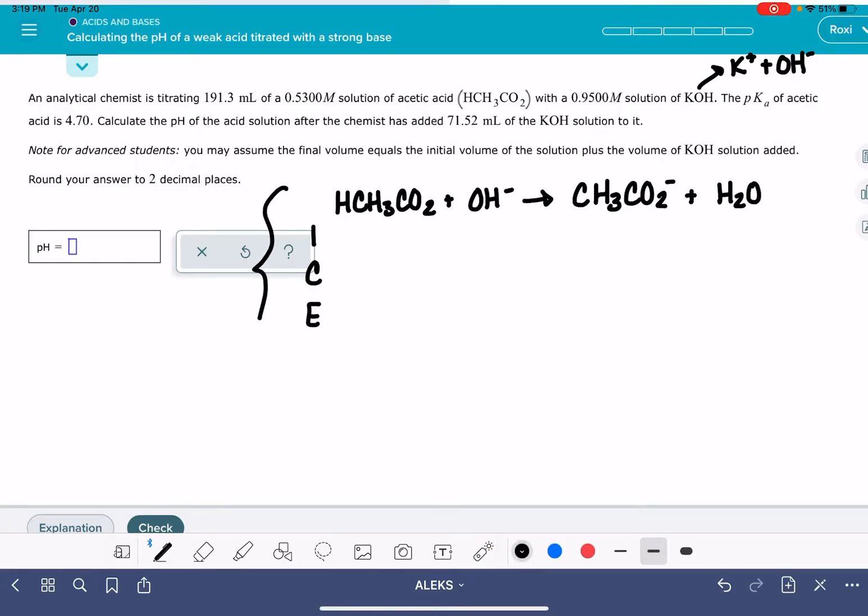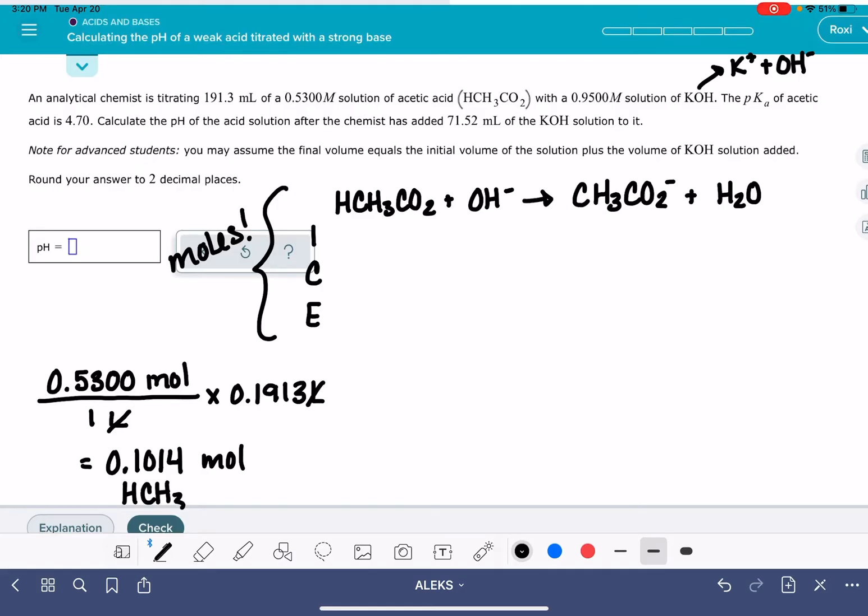The ICE table that I make in this problem needs to be done in units of moles, not units of molarities. So I have to start by calculating the number of moles of acetic acid. I can't just stick 0.530 in this ICE table like we would normally do. To calculate the number of moles, I'm going to use the molarity, 0.5300. That represents 0.5300 moles per liter of solution. And this solution is 191.3 milliliters, which is 0.1913 liters. So this is going to give me 0.1014 moles of acetic acid, HCH3CO2.